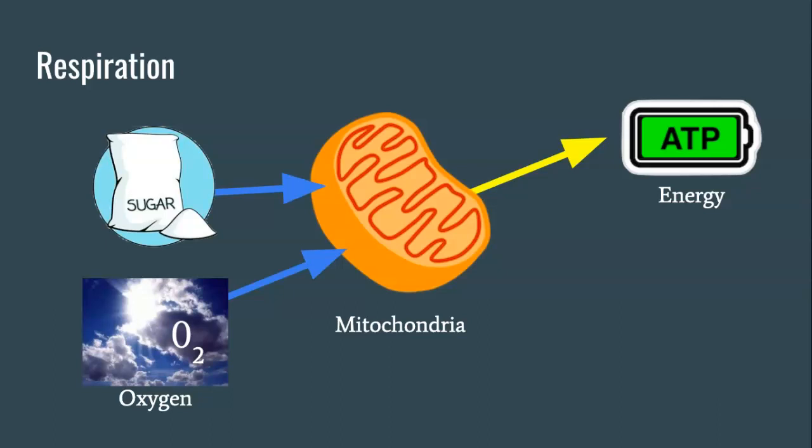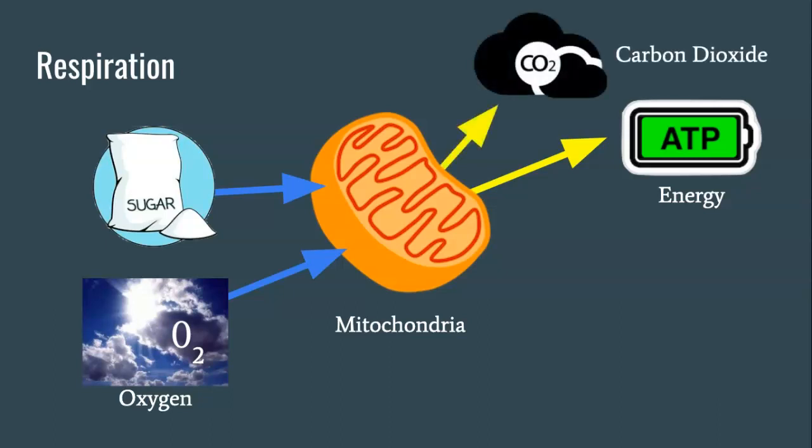But there's also some waste produced. The first waste is carbon dioxide. Now you might be thinking to yourself, oxygen and carbon dioxide, that sure seems familiar, and you'd be right. Oxygen is the molecule that we breathe in, and carbon dioxide is the molecule that we breathe out. And there's no mystery as to why that happens. The final thing produced in respiration is water. The breaking of food molecules produces carbon dioxide, energy, and some water.